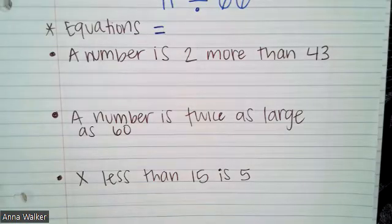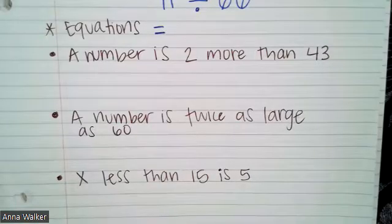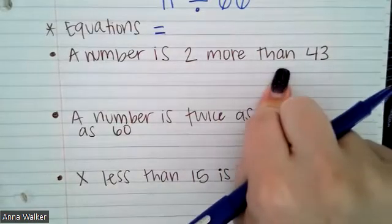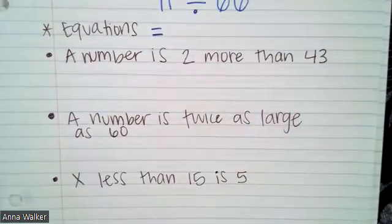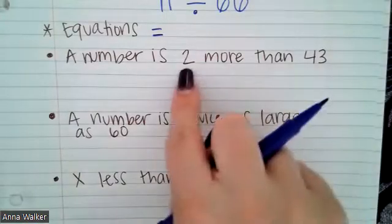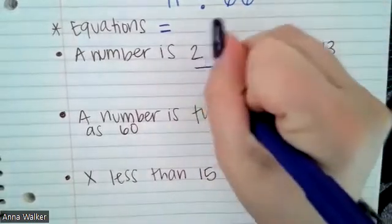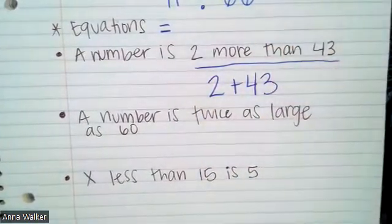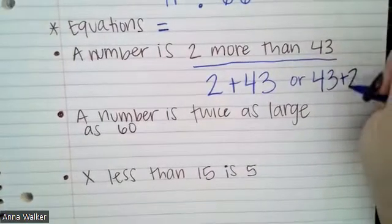Okay. So our first statement says a number is two more than 43. So if I look at kind of what vocabulary is going to help me decide if I'm adding, subtracting, multiplying, or dividing more than is going to be the key. And when we think of something more than we're going to be adding. So if a number is two more than 43, that I know that this part right here, two more than 43 is just going to be this two plus 43, or I could have written it as 43 plus two.